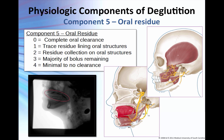Oral residue is any material remaining in the oral cavity after the initial swallow. Residue is not strictly a physiologic component — it's a result of some problem with physiology. But residue scores have a high relevance to penetration aspiration and the nature of oral intake, so they stay in the equation. For both oral and pharyngeal residue, you make your score after the initial swallow.